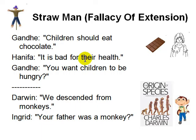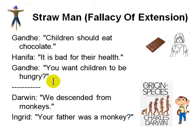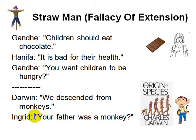Next is the straw man, or fallacy of extension. You take a small fact and extend it to apply to other situations where it doesn't. For example: 'Children should eat chocolate.' Hanifa says it's bad for health, and Gandhi extends this to say 'You want children to go hungry' — but Hanifa said nothing about children going hungry. Another common example: Darwin said we descended from monkeys, and someone extends it to say 'Your father was a monkey.' Over millions of years it might have been possible, but it doesn't mean his father is a monkey.